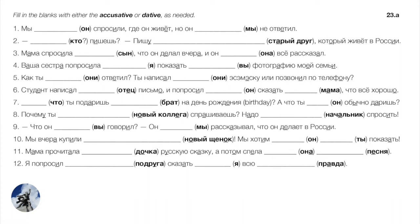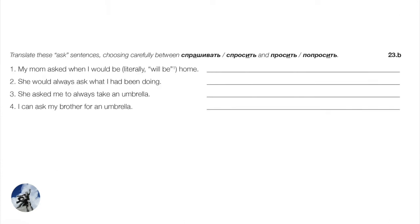Let's compose a few sentences with asking, being very careful to choose correctly between these two verbs. Remember: спрашивать/спросить is to inquire — it has to do with question marks. Просить/попросить has to do with requesting — including asking other people to do things — it has nothing to do with question marks.